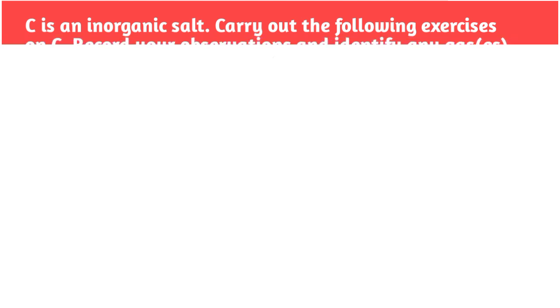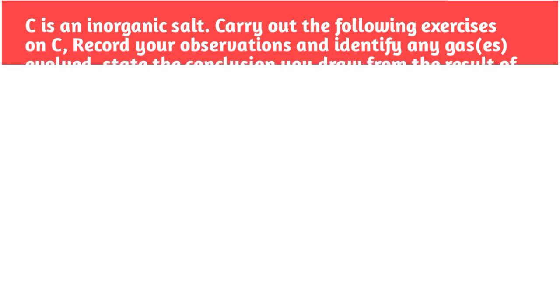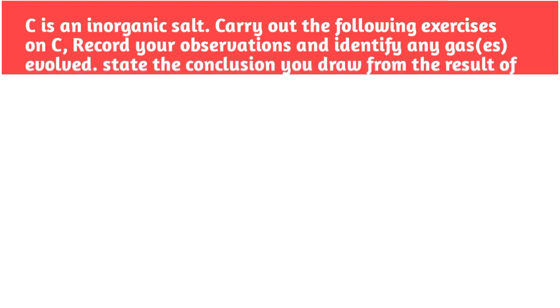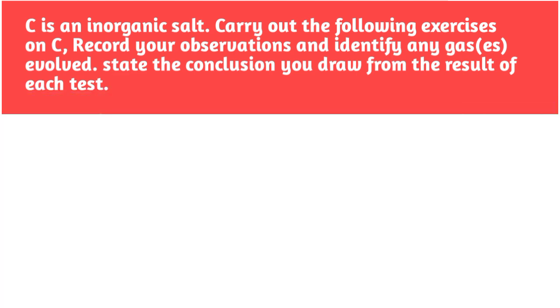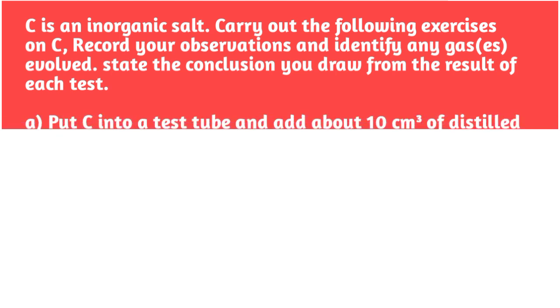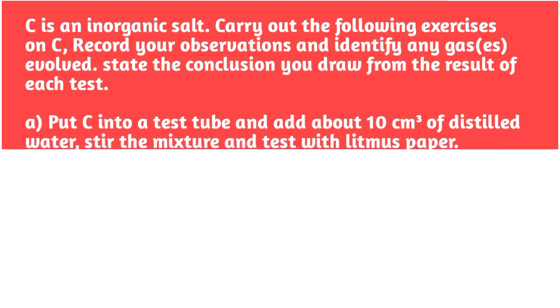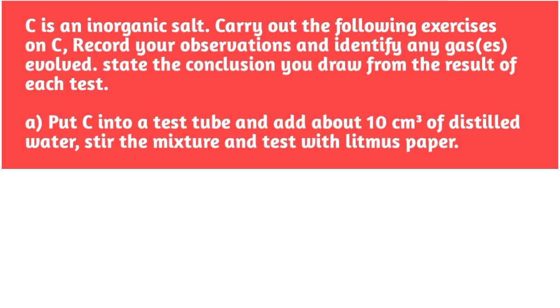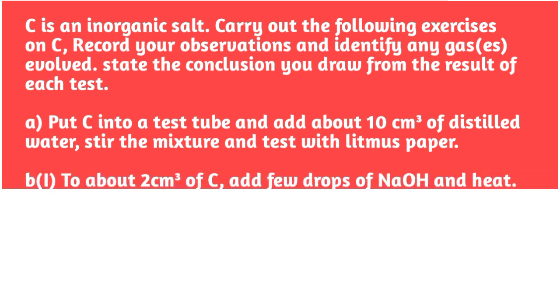You will be provided with four test tubes, a test tube rack, a spatula, distilled water, dilute hydrochloric acid, aqueous sodium hydroxide, barium chloride solution, trioxonitrate five acid solution, litmus paper, and a sample C which is a white substance. You will be given instructions on what to do with the white sample using the above mentioned bench reagent.